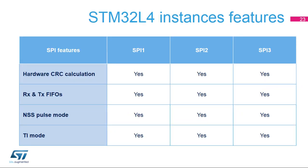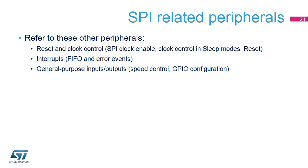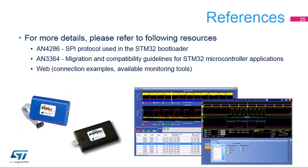There are three SPI instances within the STM32L4, and each supports all the features discussed. This is a list of peripherals related to the SPI. Please refer to these peripheral trainings for more information if needed. There are some dedicated SPI application notes. To learn more about the SPI generally, there are many webpages that discuss SPI topics and SPI bus monitoring tools. Many digital oscilloscopes support direct decoding of the SPI bus. Thank you.